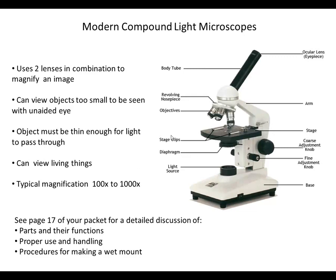The parts of the microscope: you need to be able to identify them and know what each part does. The ocular lens, more commonly referred to as the eyepiece, is what we look through — most have a magnification of 10x. The arm supports the upper part of the microscope and is used to carry it when transporting. The stage is used for supporting the slide, where the slide sits, and there are stage clips to keep the slide in place. The coarse adjustment knob, also called the big wheel, is used to rapidly move the stage up and down, allowing us to quickly move our object into the focal plane.